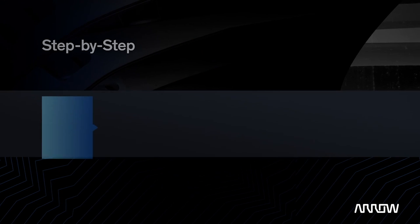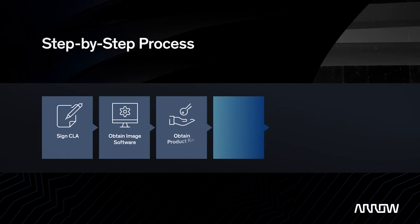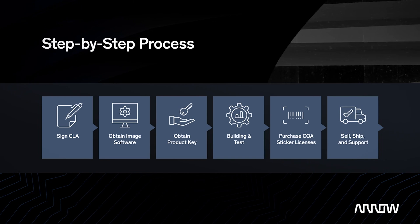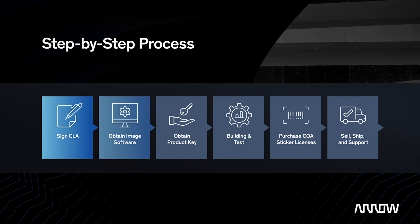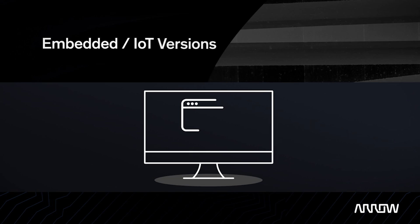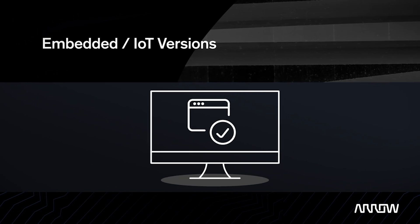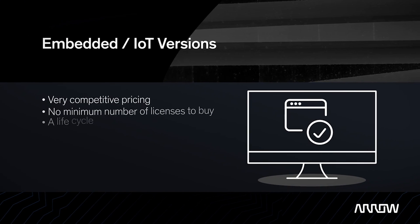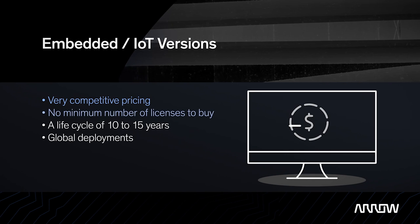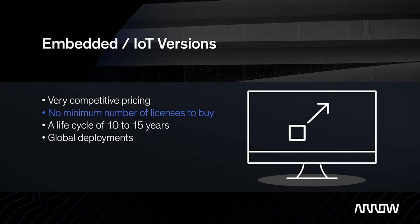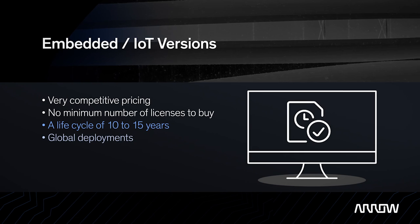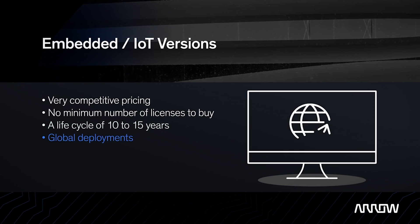This video highlights the process for obtaining Microsoft Embedded and IoT versions of the operating systems. The Embedded IoT versions are strongly recommended as they offer many advantages, including very competitive pricing, no minimum number of licenses to buy, a lifecycle of 10 to 15 years, and global deployments.